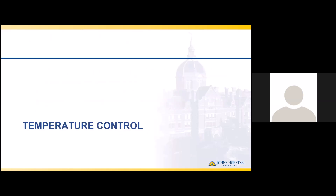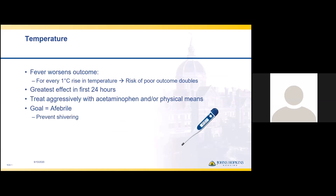Let's first go over temperature control. We know that fever worsens outcomes for patients after a stroke. For every one degree Celsius rise in temperature, there is a doubled risk of poor outcomes. Fever increases the metabolic needs of the brain, and it has the greatest detrimental effect in the first 24 hours following a stroke. We want to treat fever aggressively with acetaminophen and physical means such as ice packs or cooling blankets. The goal is for the stroke patient to be afebrile, and we also want to prevent shivering, which increases energy expenditure, oxygen consumption, and produces carbon dioxide — a potent vasodilator.